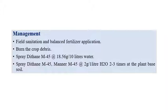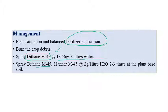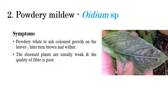For management of root rot, field sanitation and balanced application of fertilizers are recommended, along with burning of crop debris. Spraying of Dithane M45 — the trade name for Mancozeb — at the rate of 18.56 grams per 10 liters of water is recommended, along with soil base application of Mancozeb at 2 grams per liter of water, 2 to 3 times.